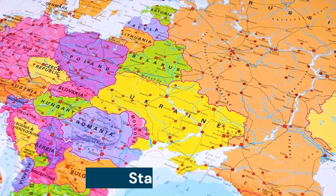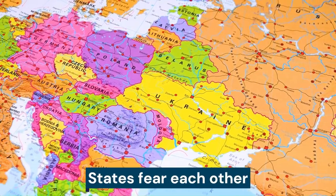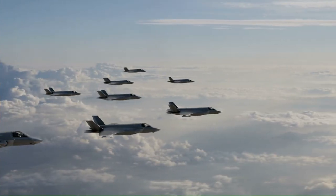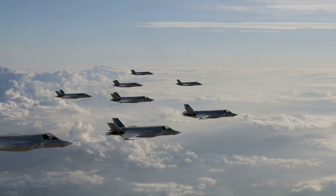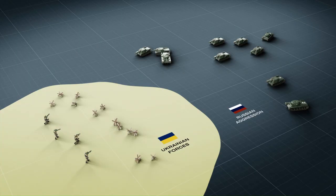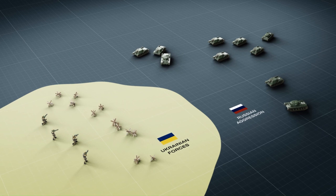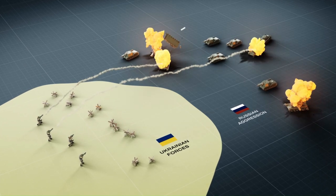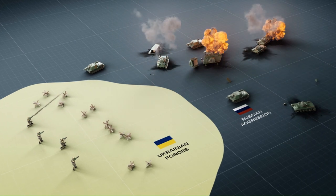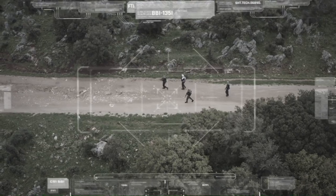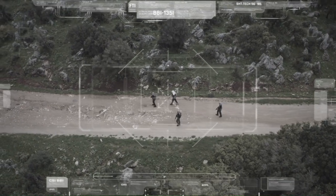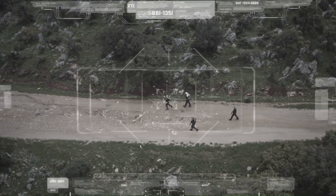States fear each other. Why do they fear each other? They fear each other because there may be a powerful state that has malign intentions. The second form of behavior you get is self-help — you do not depend on anybody else. This is not to say you can't form alliances, but it is to say it's a self-help world.